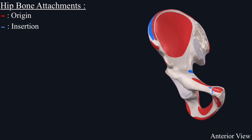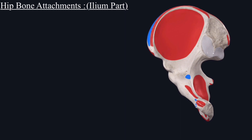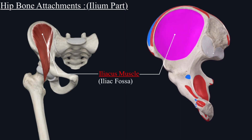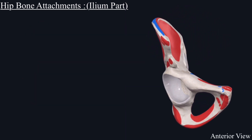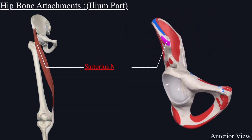First, we will discuss muscle attachments to the ilium part. From the iliac fossa originates the iliacus muscle. The sartorius muscle originates from the anterior superior iliac spine.